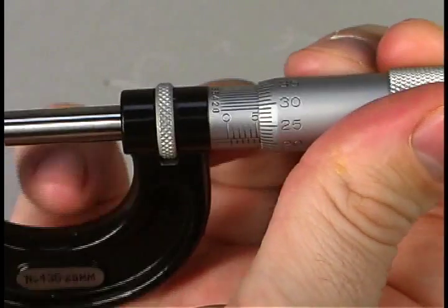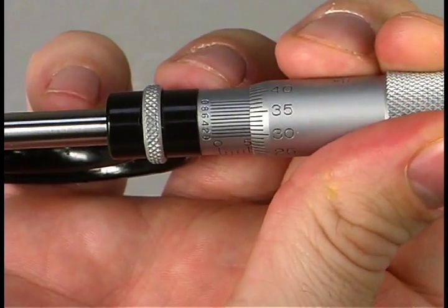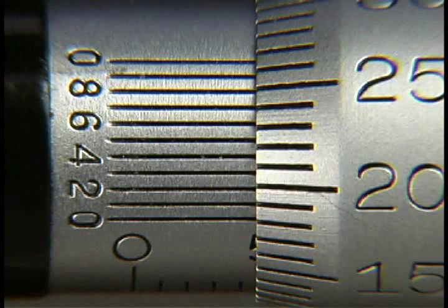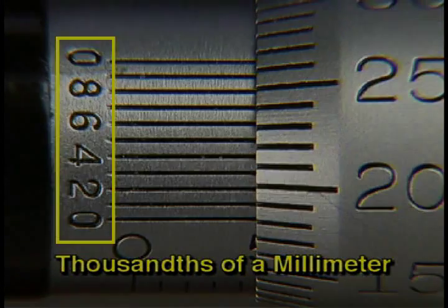Some metric micrometers will have a vernier scale, so it is possible to read measurements to thousands of a millimeter. Read these micrometers the same way you would an inch micrometer, but remember that the metric vernier value represents the...